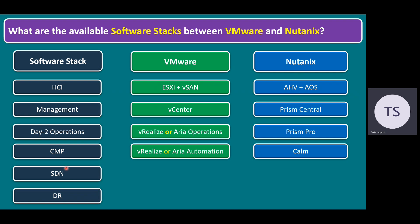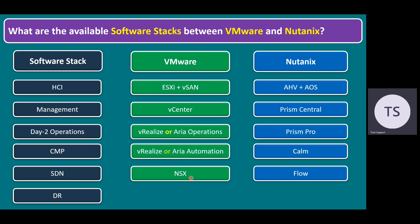Some customers want to enhance their network at the hypervisor level to maintain overlay networking, logical switching, logical routing, logical firewall, and advanced load balancing. These functionalities are available only with software-defined networking, which requires a network hypervisor. The VMware network hypervisor is NSX — a network and security platform to manage the entire overlay networking. Similarly, Nutanix also has a software-defined networking product called Nutanix Flow.